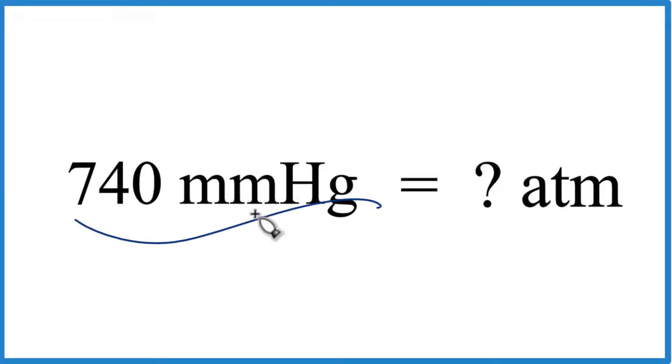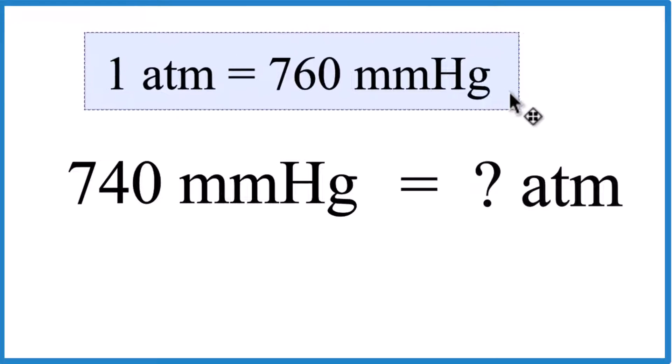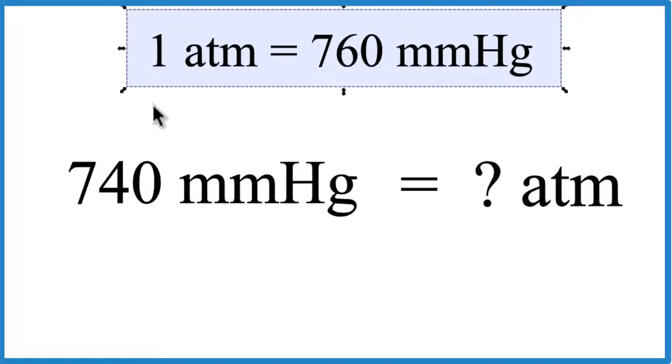Let's convert 740 millimeters of mercury to atmospheres. We need to know a conversion factor for millimeters of mercury to atmospheres. Either you memorize that one atmosphere equals 760 millimeters of mercury, or you're allowed to look it up.